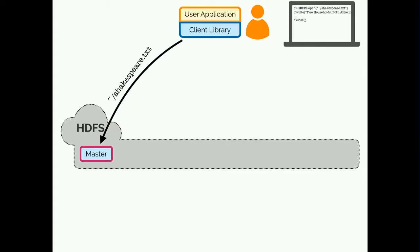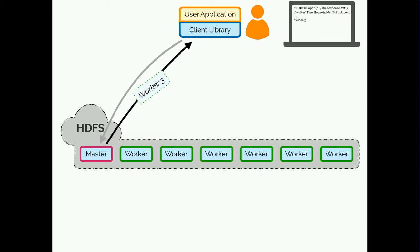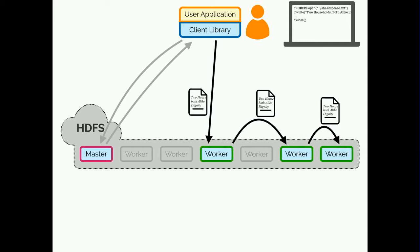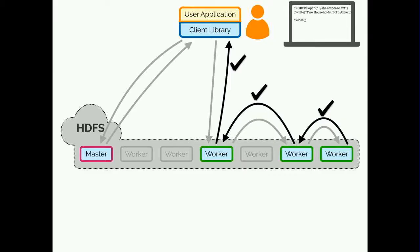This involves a bit of legwork. In HDFS, it involves contacting a master server that keeps track of the file system metadata. The master server records the file creation and responds to the client, telling it to contact one of several worker nodes responsible for actually storing the data. The client then contacts the worker and sends it the data. For redundancy, HDFS includes multiple workers in case one goes down, to avoid data loss. Each worker stores a copy of the data and responds back to the client with confirmation. Finally, the client contacts the master one last time to mark the file as closed.